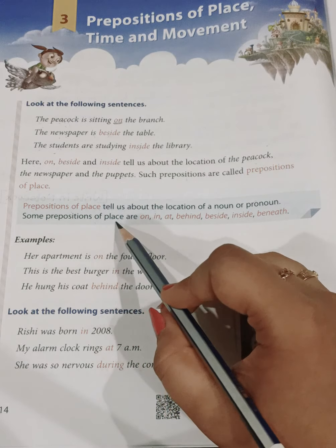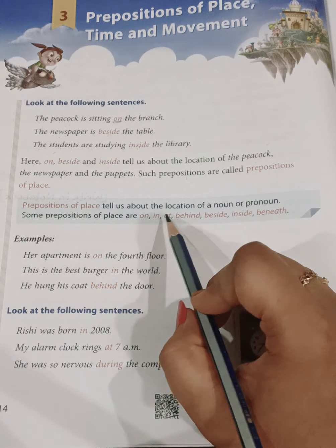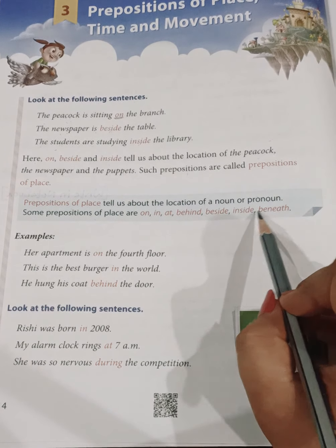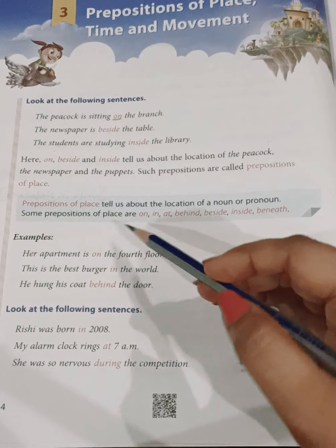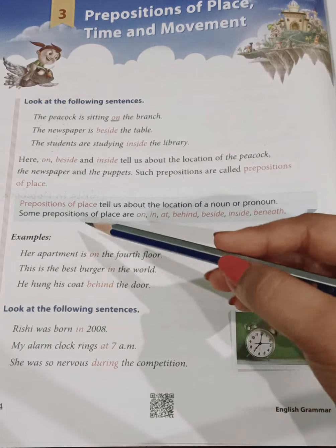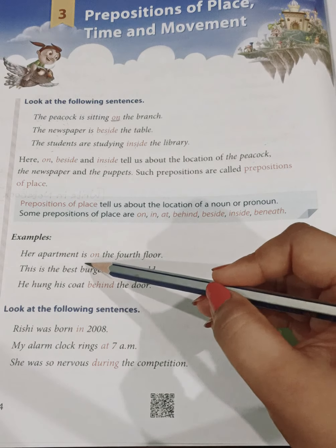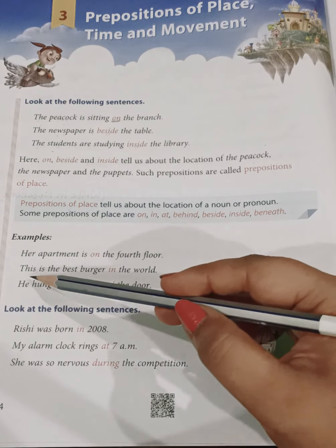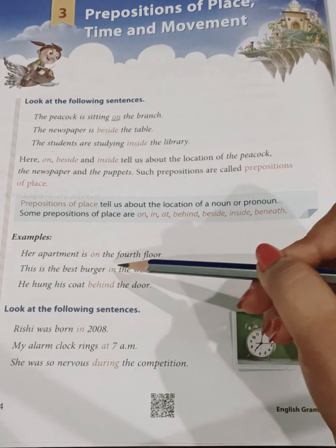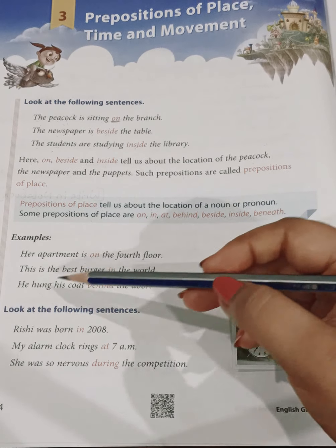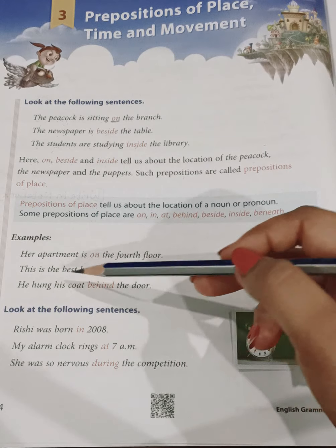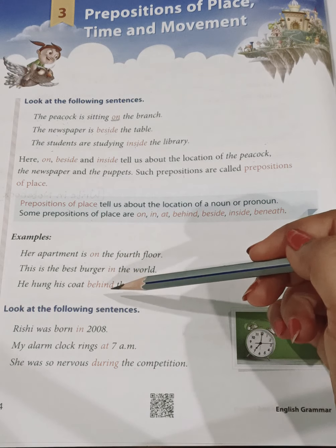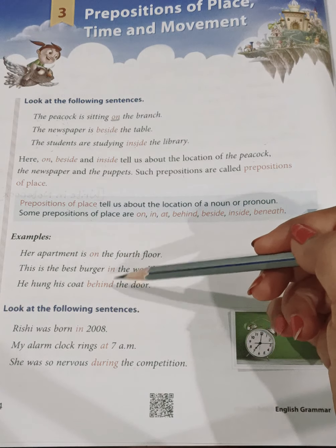Some prepositions of place are: on, in, at, behind, beside, inside and beneath. Examples: Her apartment is on the fourth floor. This is the best burger in the world. He hung his coat behind the door. So all these words represent place.